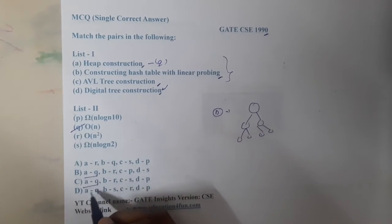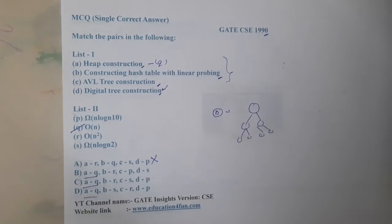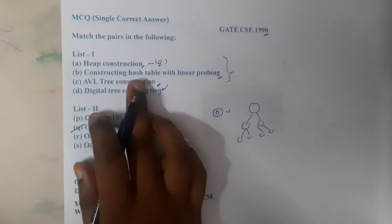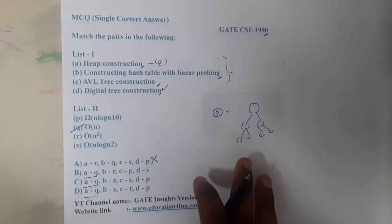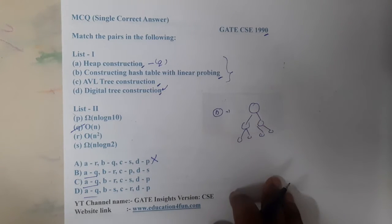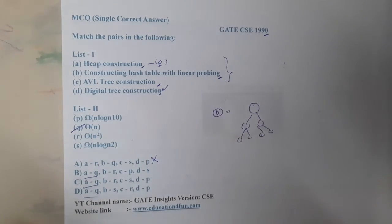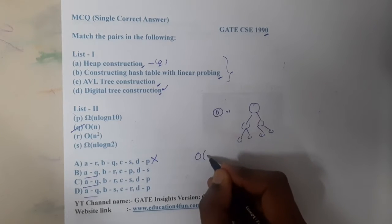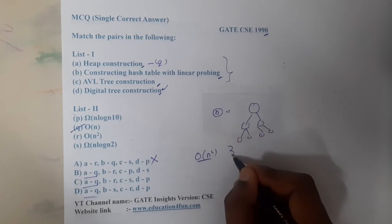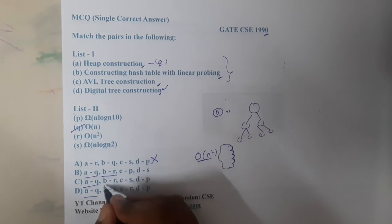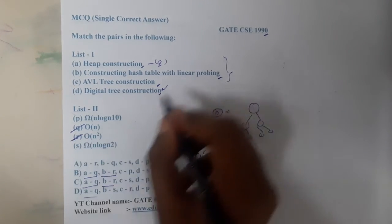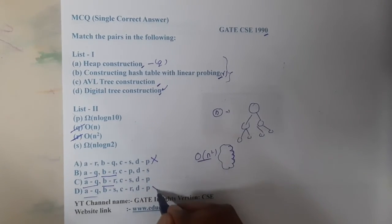Moving on to second, construction of a hash table with linear probing. Mostly I think it is with respect to worst case. In worst case it can go up to big O of n square, because when it is exactly into the next position it will take again loop and check. So R should be the answer for this, and again option D is wrong.